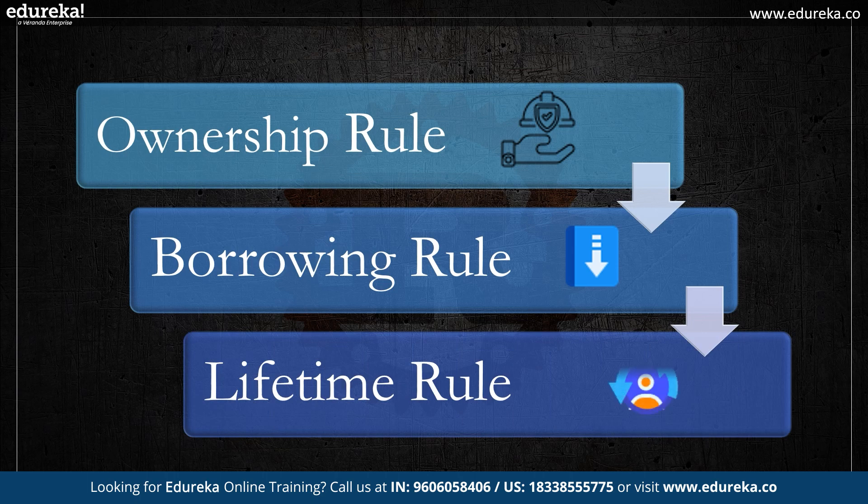Last is the lifetime rule. Rust contains a concept called the lifetime rule that specifies how long references are valid. The usage of incorrect references is avoided via lifetimes, which makes sure that borrowed references do not outlive the values they point to. These were the basic fundamentals about Rust programming.